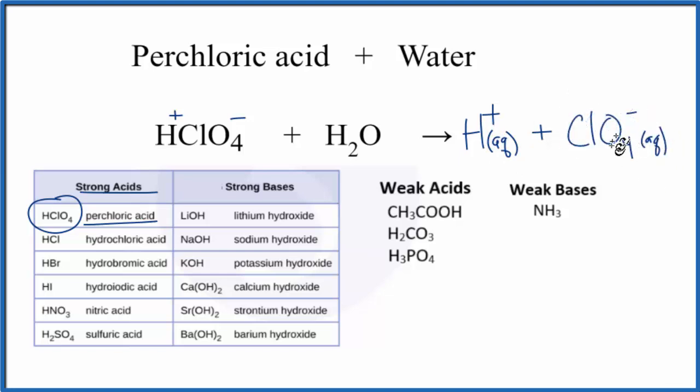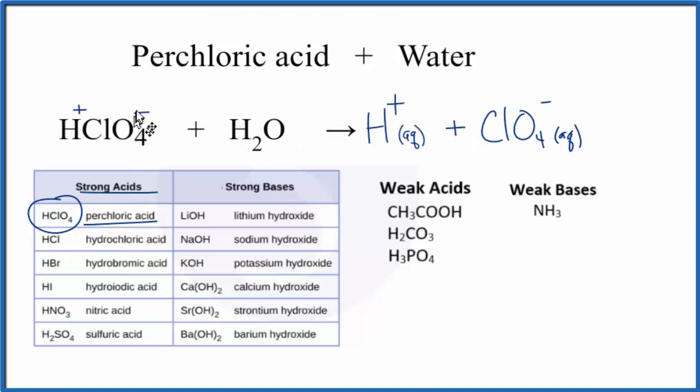We put that 'aq' after to show it's dissolved in water. Sometimes you'll see water written above the arrow as well, but since we've written aqueous, that means it's dissolved in water. To recap, when we put perchloric acid HClO4 in water, we end up with H+ and ClO4-.